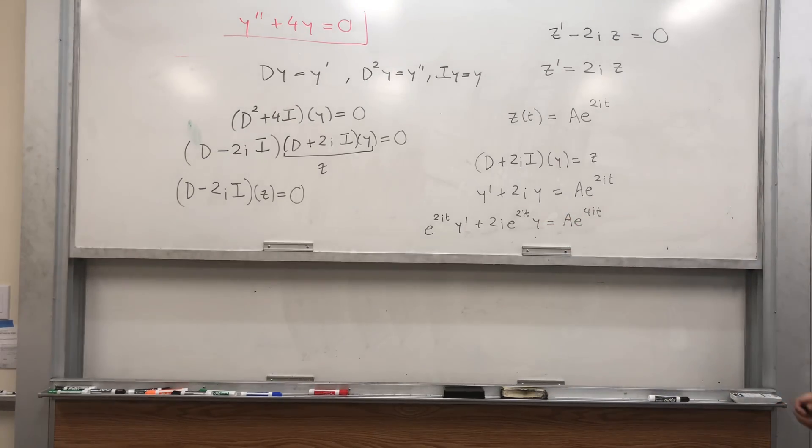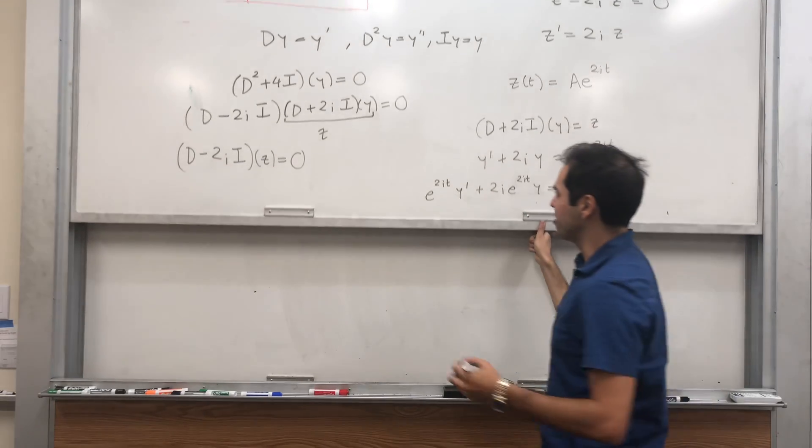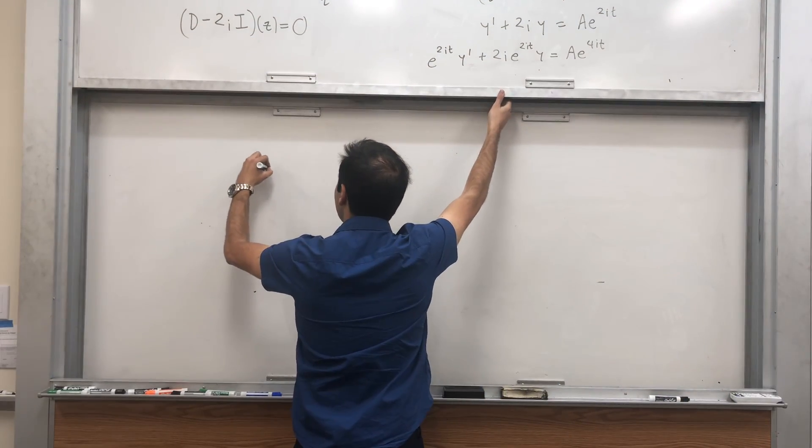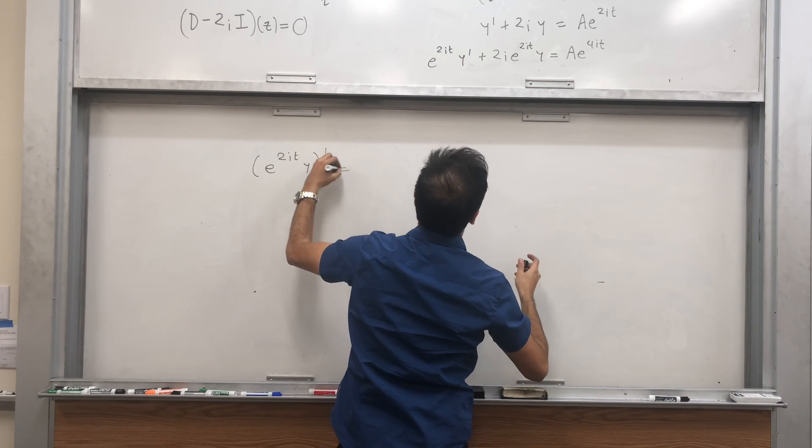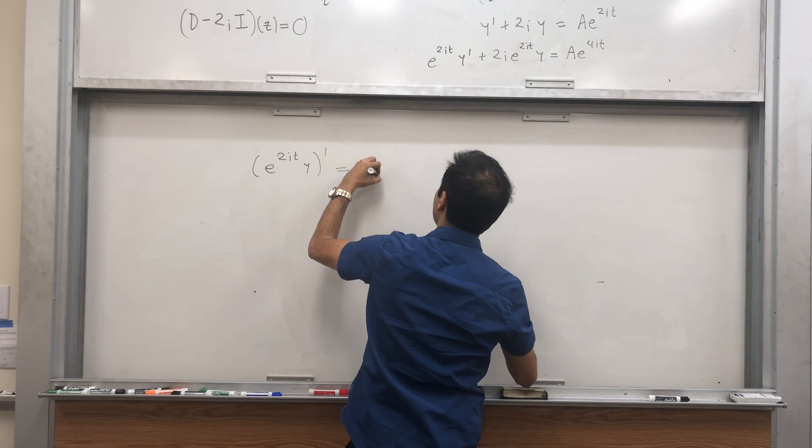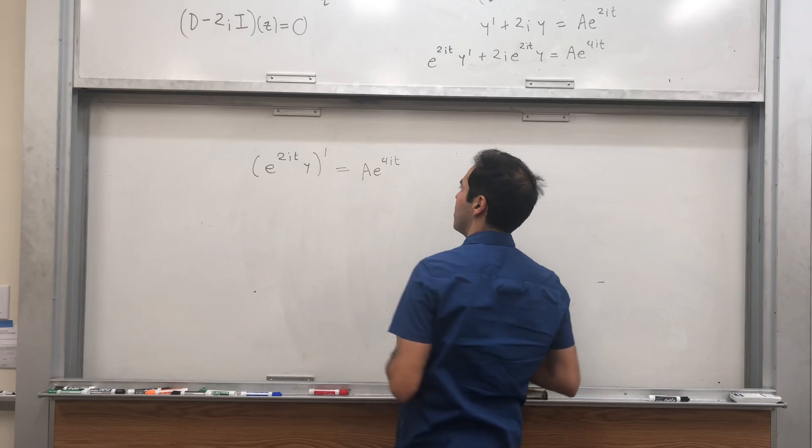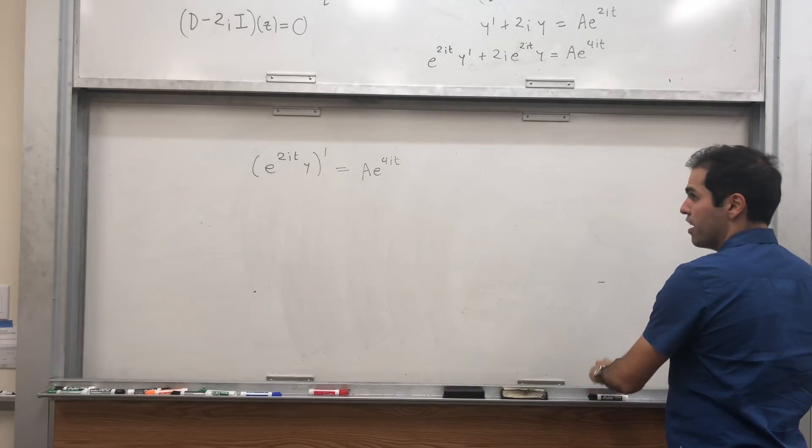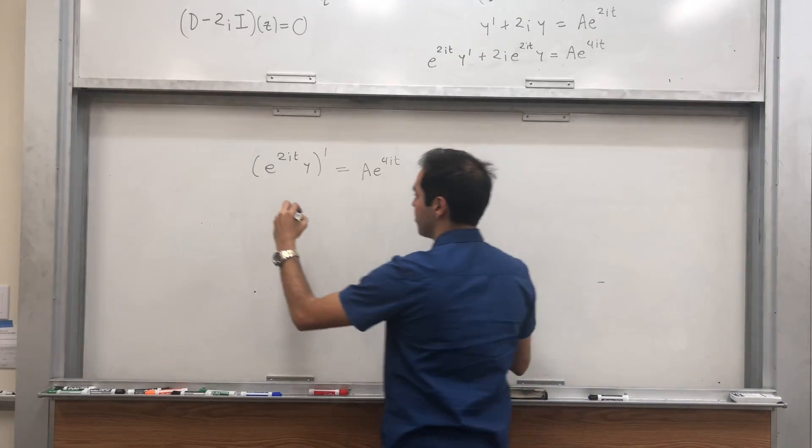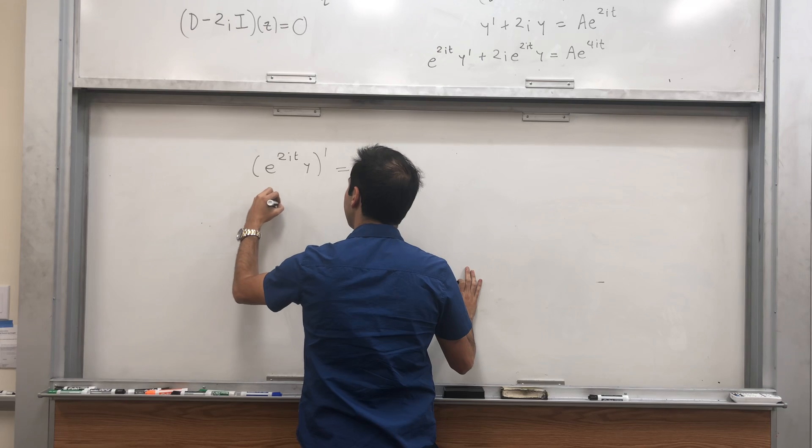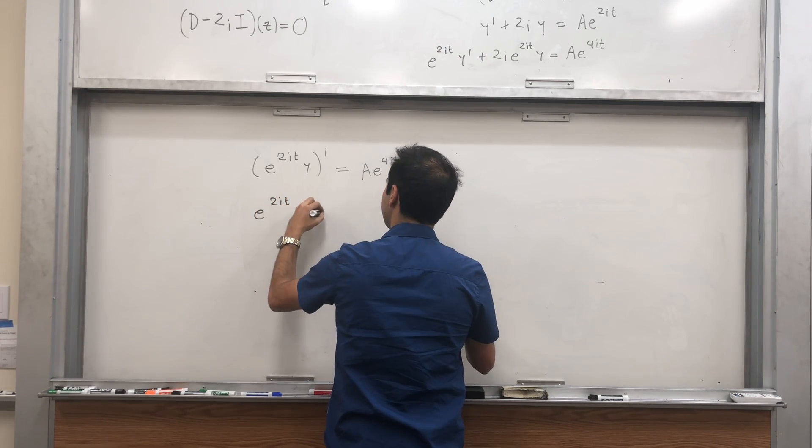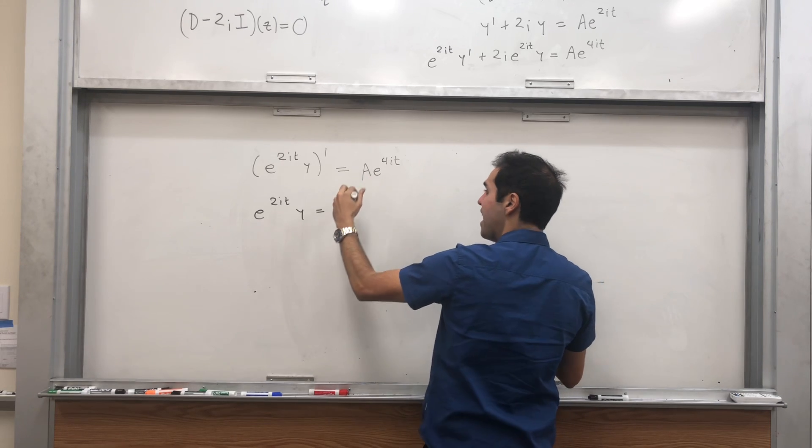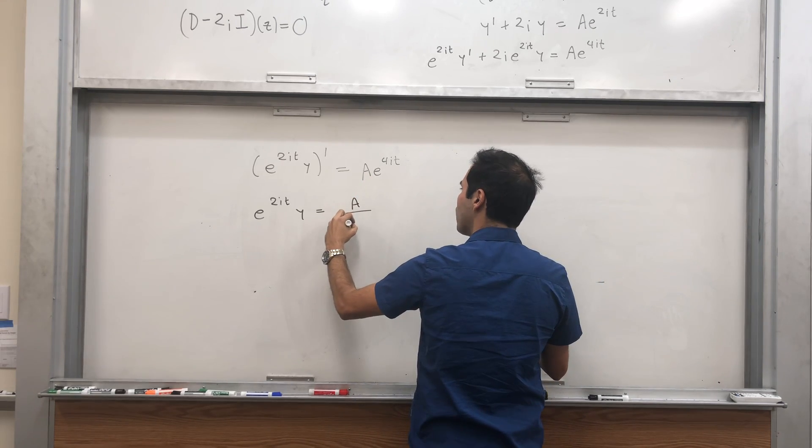And again, the left-hand side, you just have (e to the 2it y) prime equals Ae to the 4it. And therefore, you just integrate, so e to the 2it y equals A over 4i,